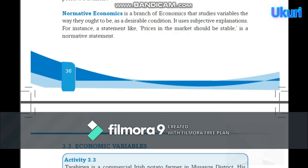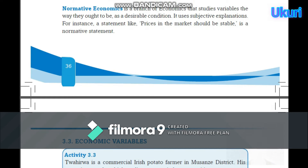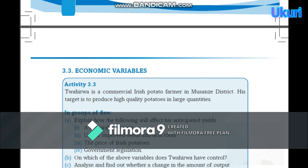Normative economics is a branch of economics that studies the variables the way they ought to be — as a desirable condition. It uses subjective explanations. For instance, a statement like 'prices in the market should be stable' is a normative statement. These examples help us understand normative and positive economics as we mentioned in Unit 1.